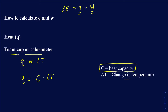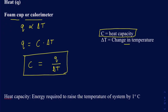The heat capacity will be a different value for different containers, and a lot of times you have to calculate it before you proceed with the experiment. Rearranging gives heat capacity C equal to Q over delta T. The definition is the energy required to raise the temperature of the system — in this case the calorimeter — by one degree Celsius. Units are calories per degree Celsius, or joules per degree Celsius.